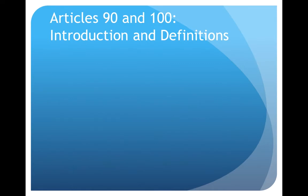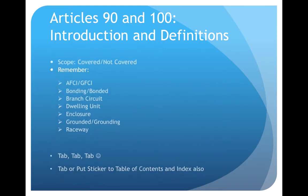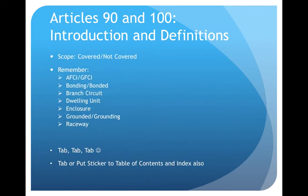Start with Article 90 and 100. Article 90 is the introduction — go over the scope of the NEC code, what's covered and what's not covered. Article 100 is definitions, so look at these and make sure you understand them: bonding and bonded, the difference between grounded and grounding, dwelling unit, and branch circuit. I'm not saying these are the only definitions you need to know, but at least know these at the very least.